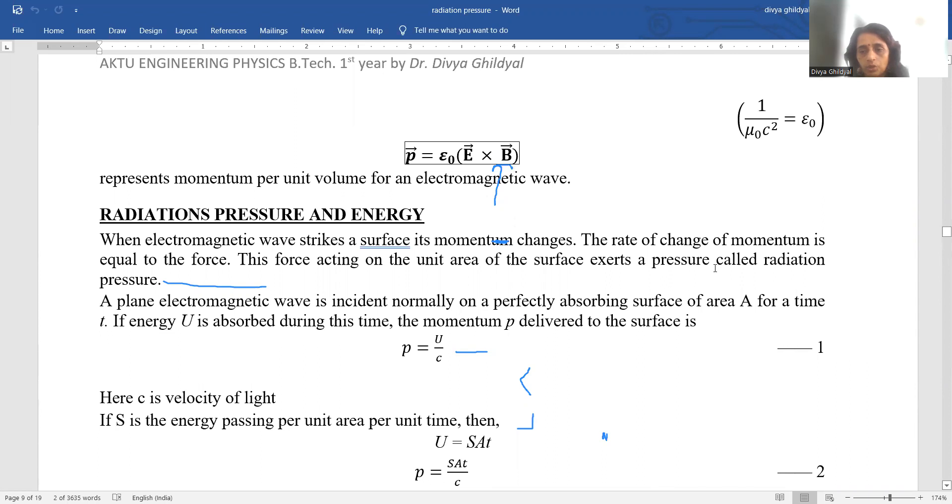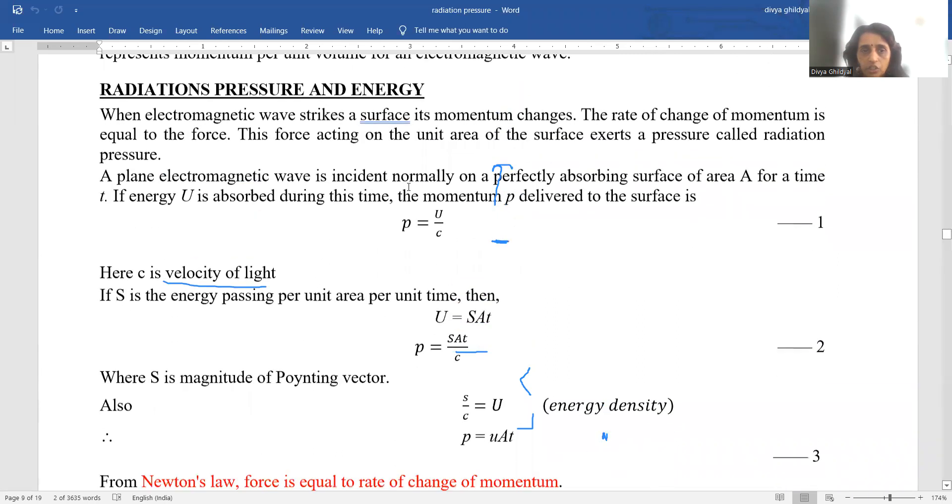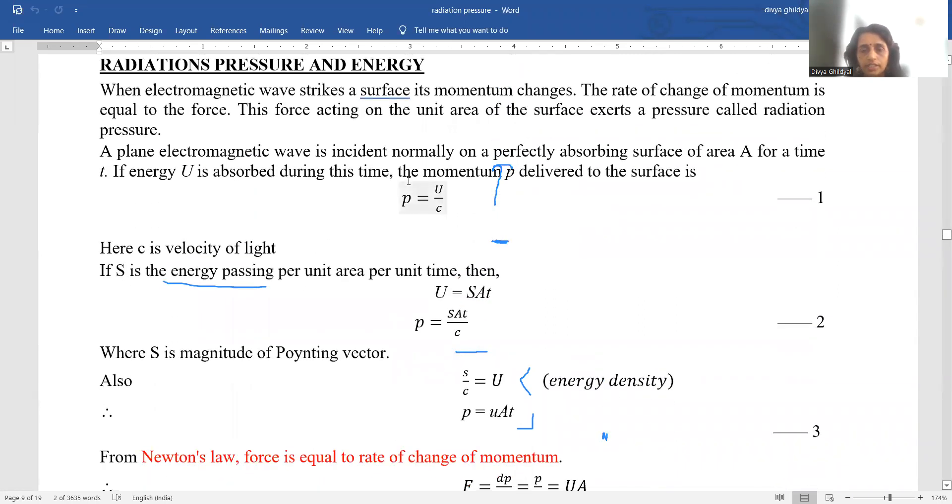Force is equal to pressure is force upon area called as radiation pressure. So a plane electromagnetic wave is incident normally on a perfectly absorbing surface of area A for a time t.